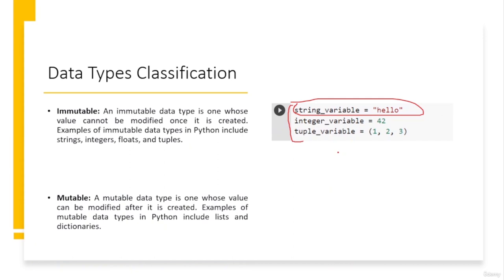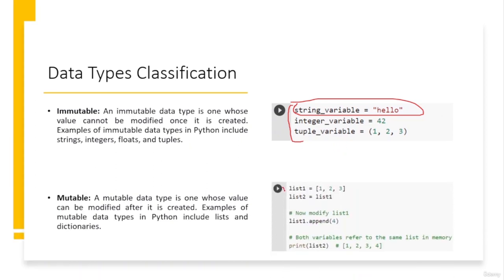For mutable types, when you assign a mutable object to a new variable, both variables refer to the same object in memory — so modifying the object using one variable will be visible when accessing it through the other. For example, list1 and list2 refer to the same list; if you do list1.append(4) and print list2, you can see 4 is in list2 as well because list2 was assigned to list1.